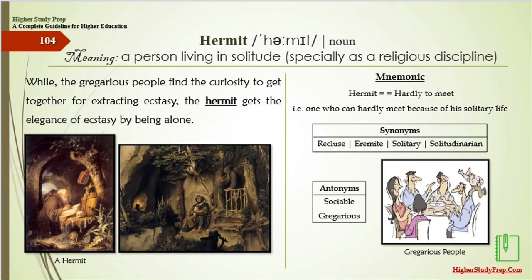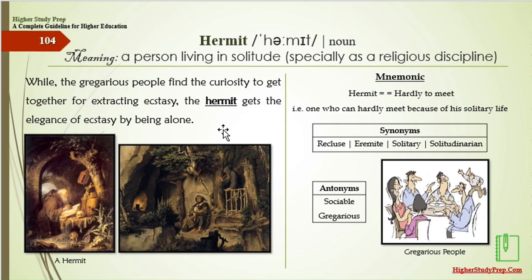Hermit means a person living in solitude — someone who can hardly meet others because of his solitary life. A hermit hardly meets people, especially as a religious discipline. While gregarious people find curiosity to get together for ecstasy, the hermit gets the elegance of ecstasy by being alone. The synonyms of hermit are recluse, eremite, solitary, or solitudinarian. The antonyms are sociable and gregarious.